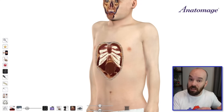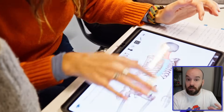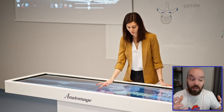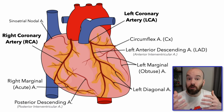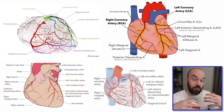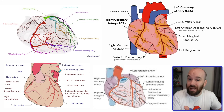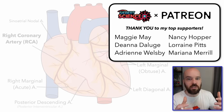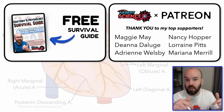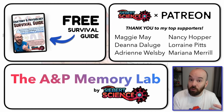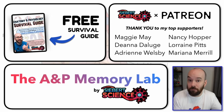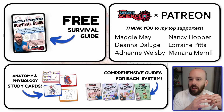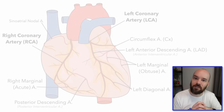Thank you to Anatomage for sponsoring this video. Every three-dimensional image used is taken from an actual cadaver, so we're really seeing what the human body looks like — not just an idealized diagram. When learning anatomy, I highly recommend using different diagrams — not just mine, but 3D diagrams and others you find online — because if you only use one diagram, you're only learning that diagram. That's one of the strategies in my free A&P survival guide. I'm also creating a course called the A&P Memory Lab to help you build a study system for anatomy and physiology. Check out all those resources in the description below. Thanks for watching, and I'll see you in the next video.